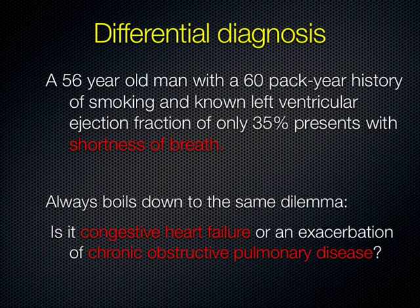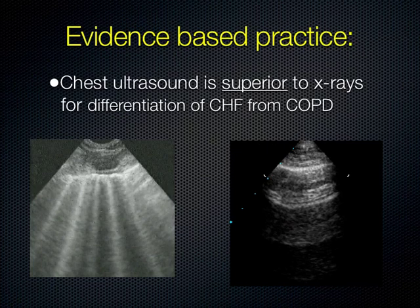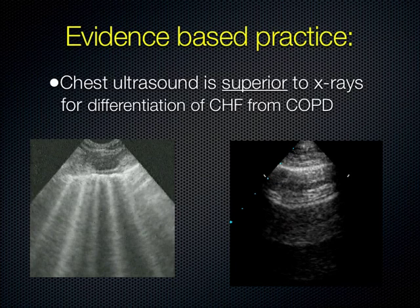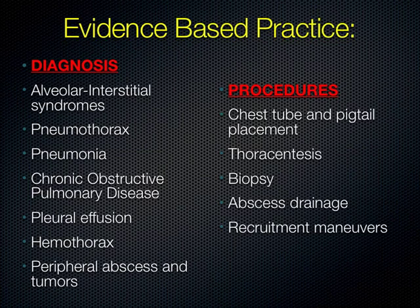Lung ultrasound is very much based in evidence — there's a large and growing body of evidence on using ultrasound for imaging the lungs. Ultrasound is superior to x-rays for differentiating CHF from COPD. We can adequately evaluate alveolar interstitial syndromes, pulmonary edema, pneumothorax, pneumonia, COPD, pleural effusions, and hemothorax. Not only can we appreciate diagnoses, but we can also guide procedures and imaging to increase patient safety.